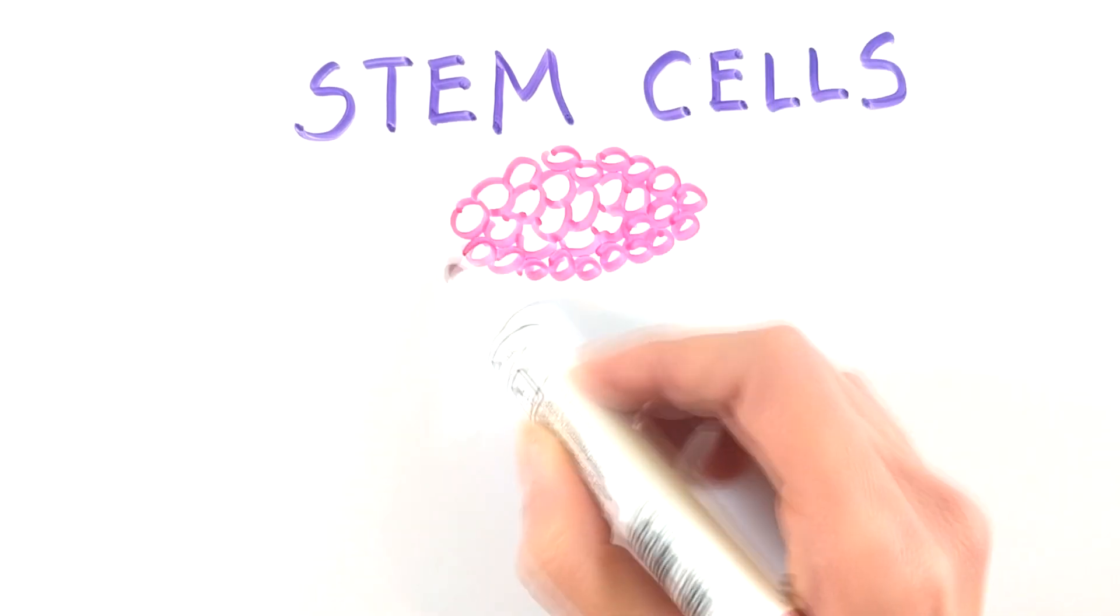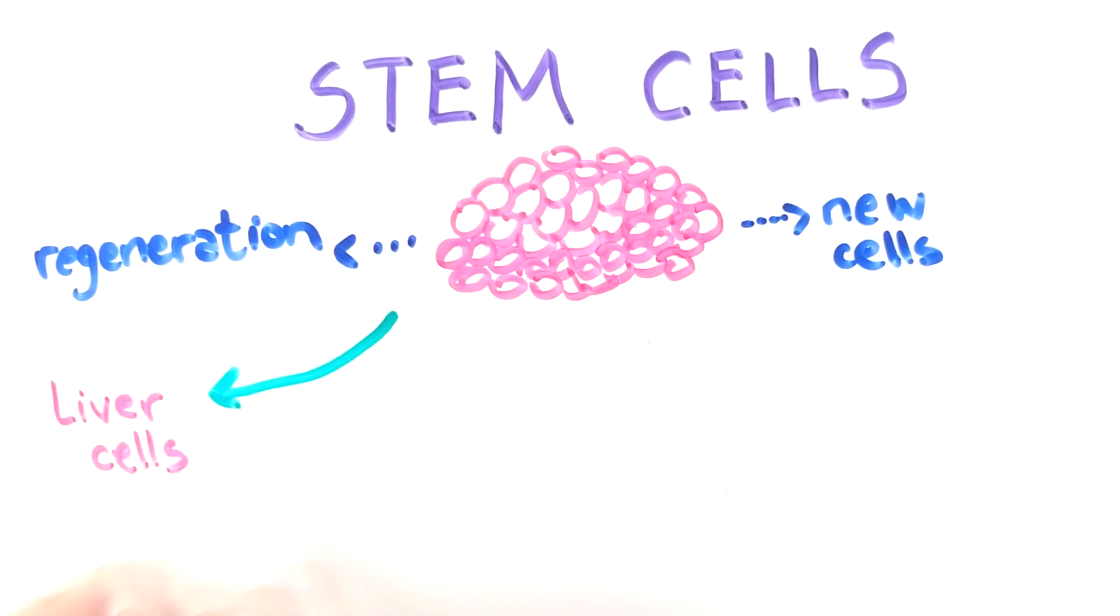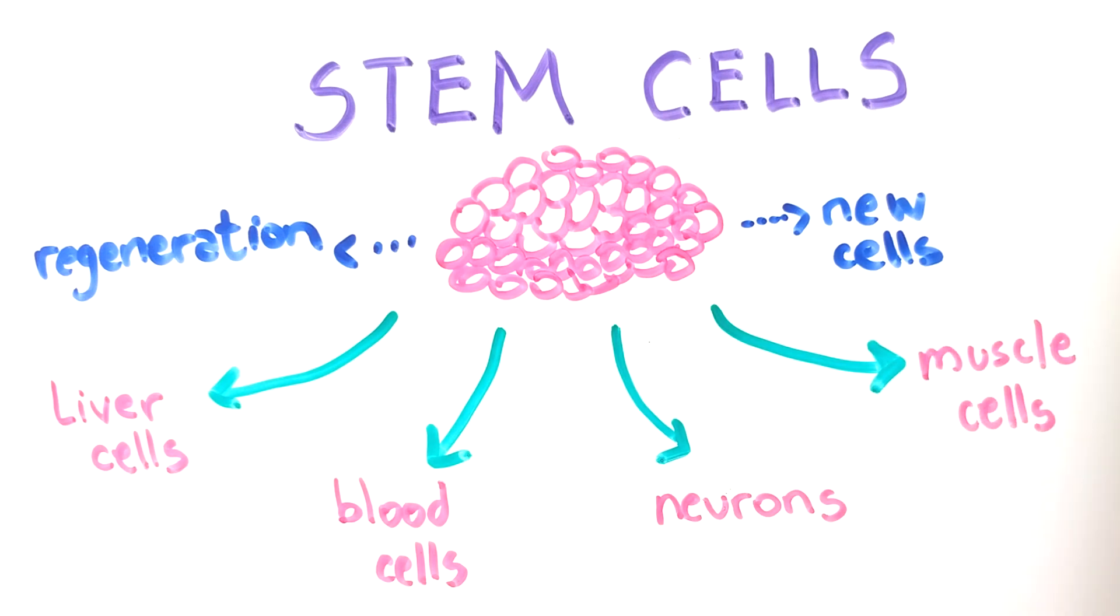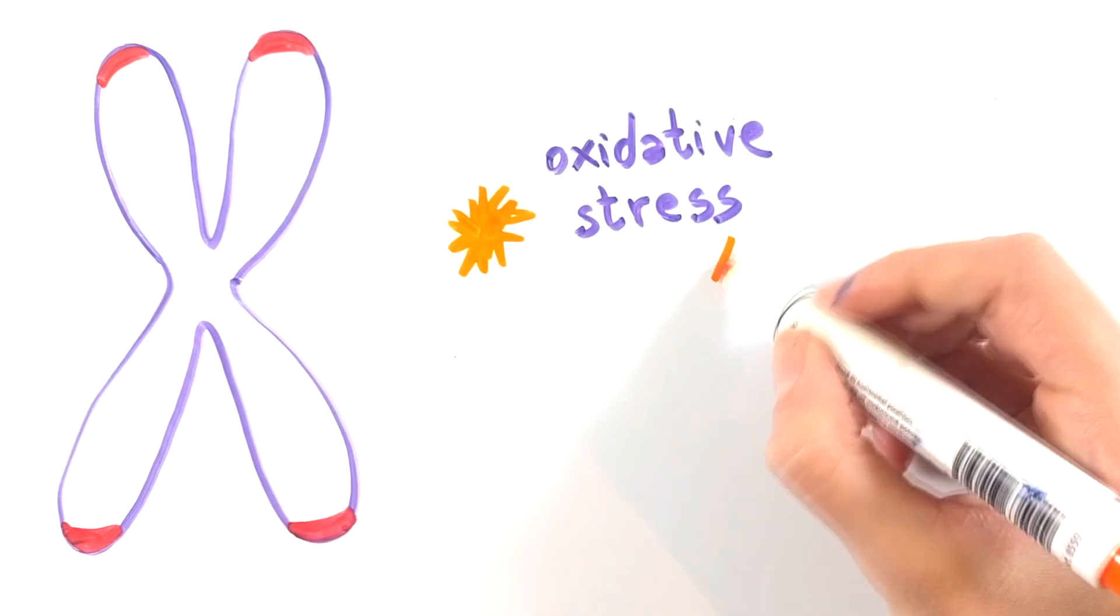Also there are cells called the adult stem cells that are found in many organs. They provide new cells for the body as it grows as well as regenerating cells that are damaged or lost. As they are also affected by the shortening of their telomeres and oxidative stress, their number declines as the time goes by.